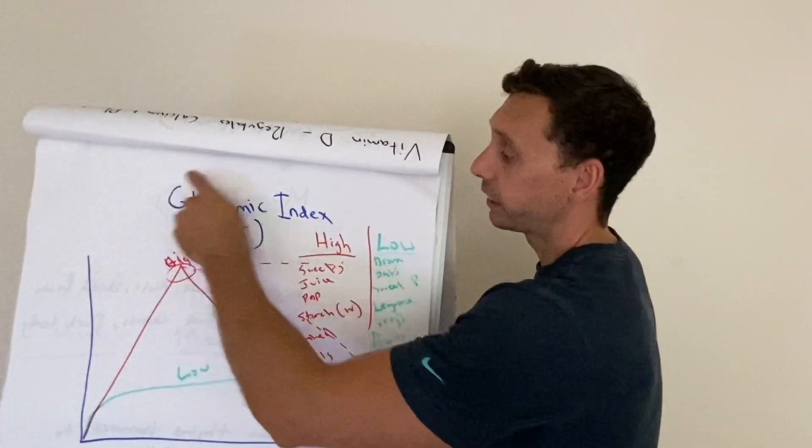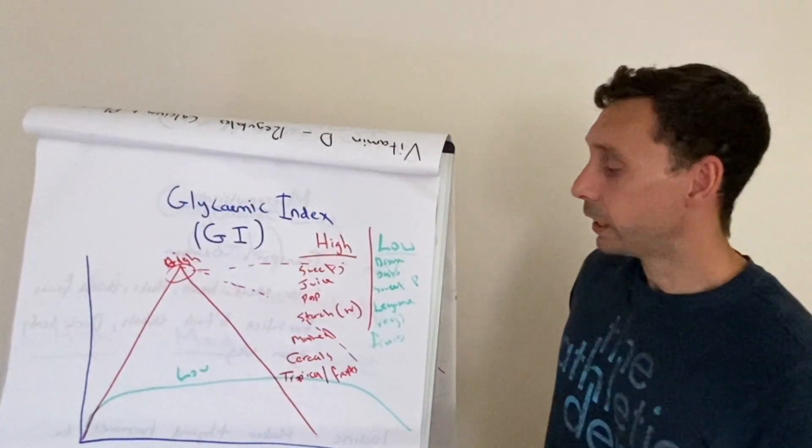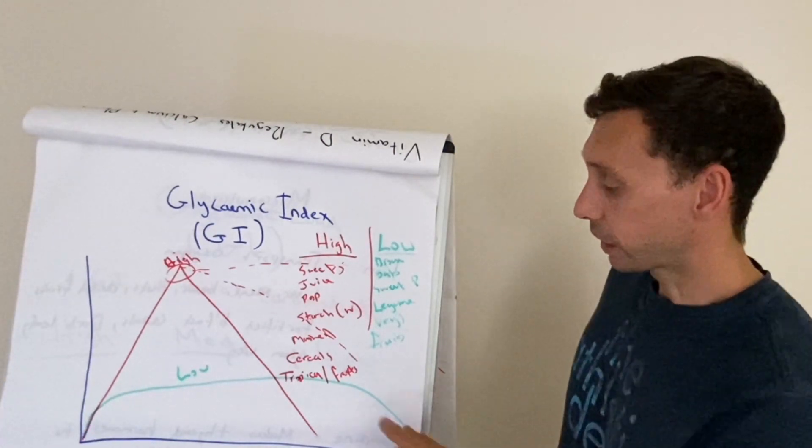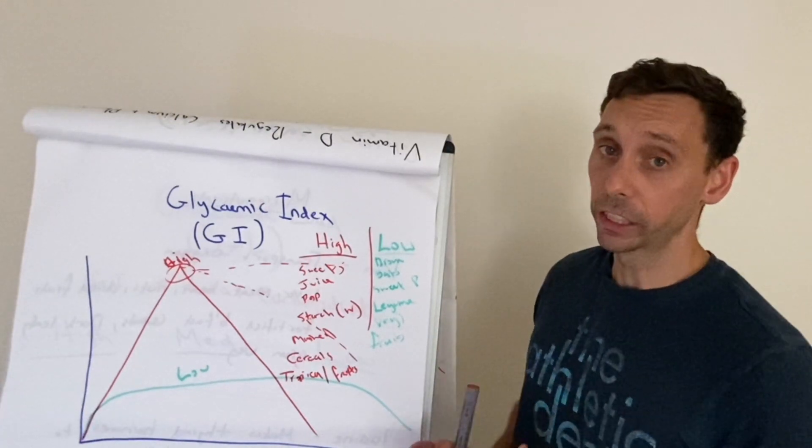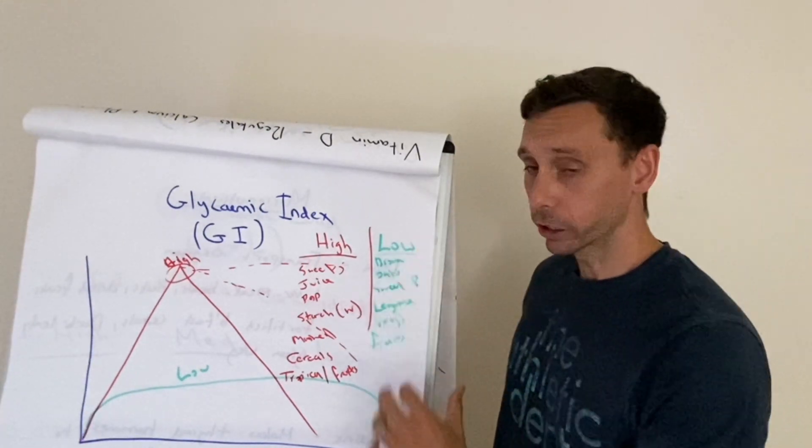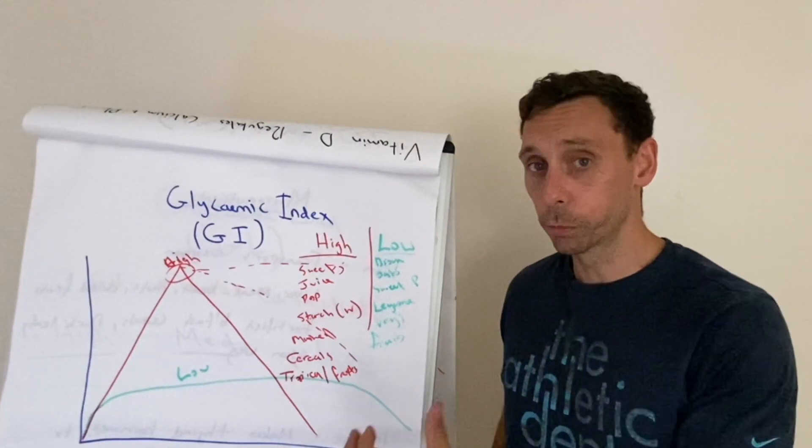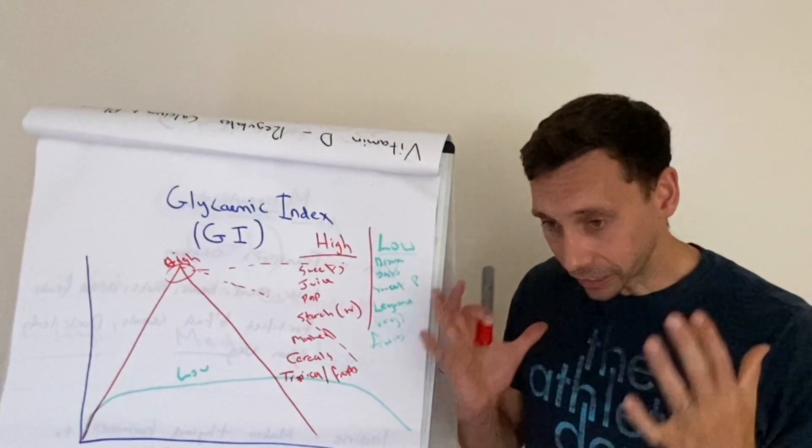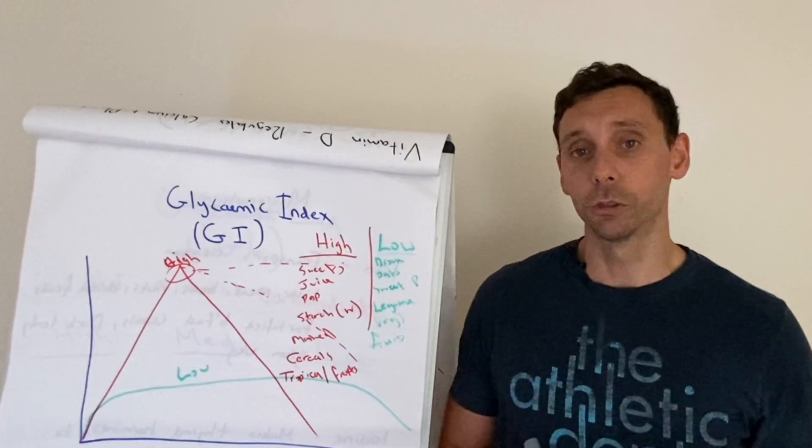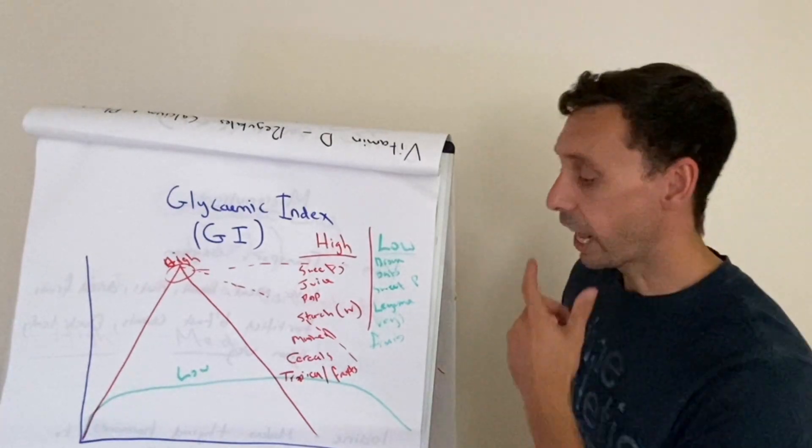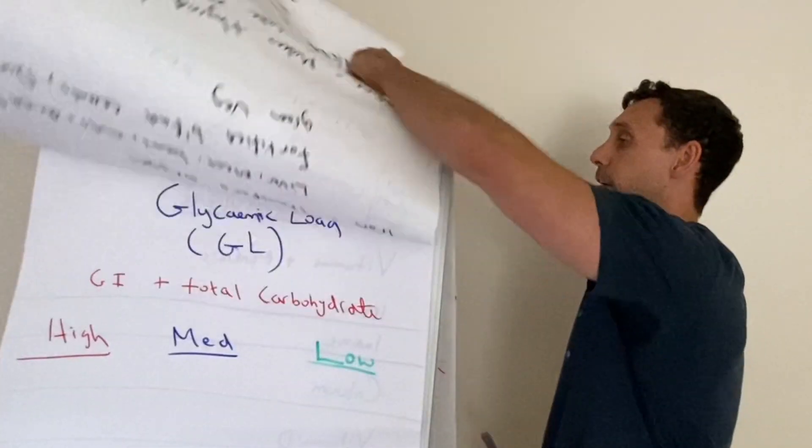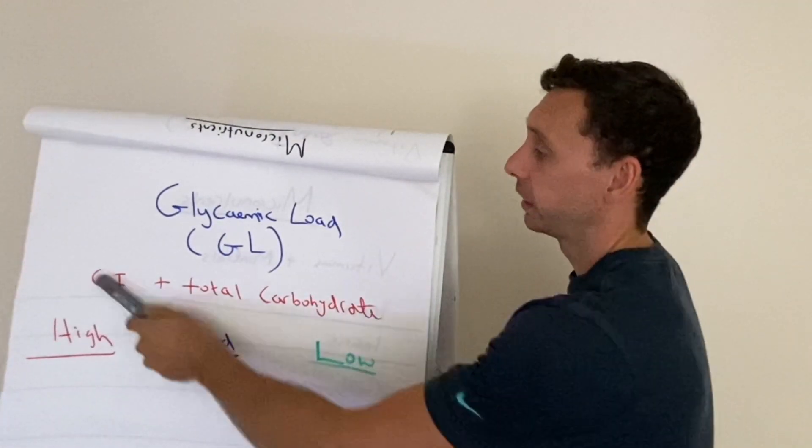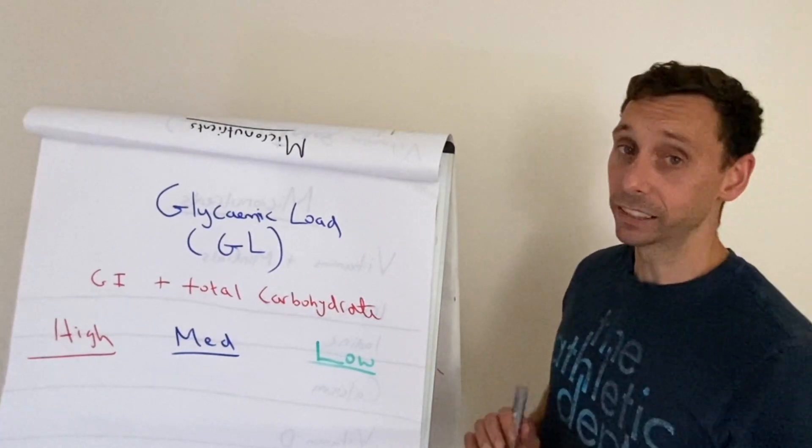But before you do this, it does have one major flaw: it does not consider the amount of carbohydrate that you eat. For example, watermelon is considered very high glycemic index, whereas chocolate, because it has fat in it, the fat slows down the absorption and it's therefore considered more medium to low glycemic index. Now that doesn't make sense, right? Because how can chocolate be better for your glucose levels than watermelon? This is where the next measure that we can use comes in and it's called the glycemic load, the GL. This is the big brother to glycemic index that's rarely talked about.